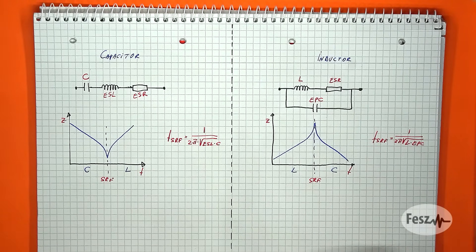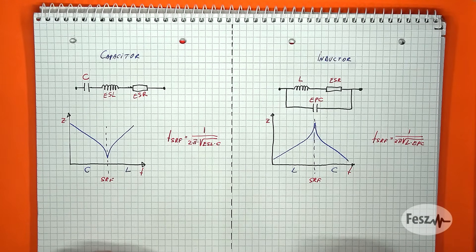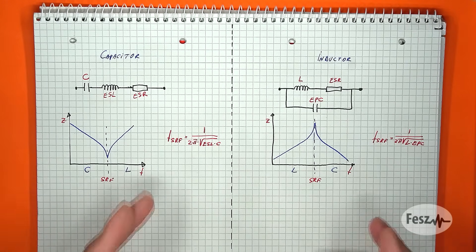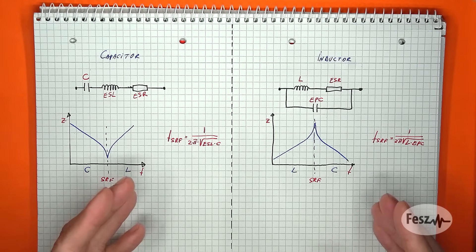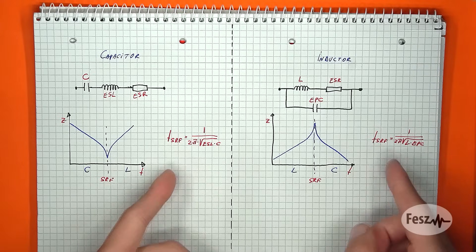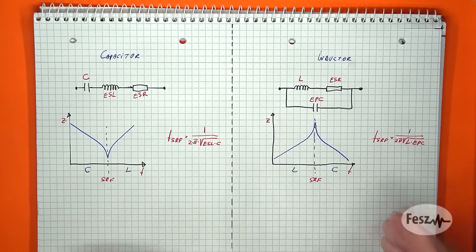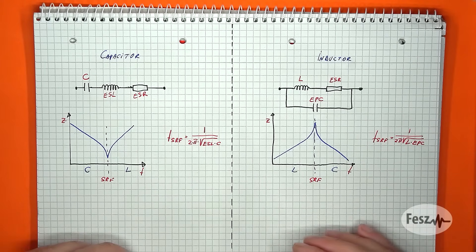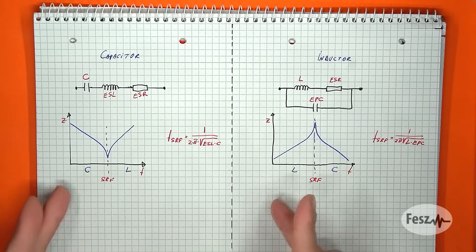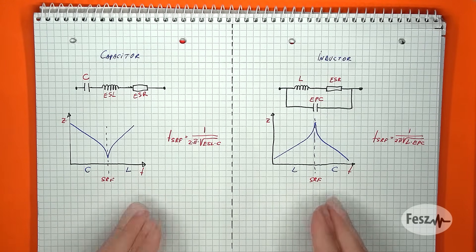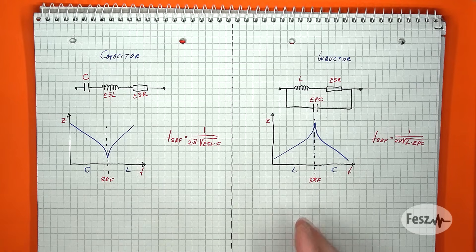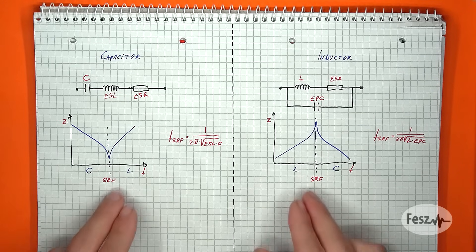At some frequency, the two components have the same reactance that cancels out. In the case of the complete component, this is called a self-resonant frequency. When plotting out the impedance, the component will have one type of behavior up to the self-resonant frequency and the other type afterwards. So if you need the component to keep its properties, it should be used well below the self-resonant frequency.